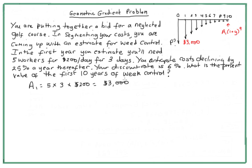Like many weeds, you pull it up the first year and it goes dormant, but you know you're going to have to have a crew back next year because it's pretty persistent. However, you estimate that every year you do this, the cost is going to decline by 25% a year — you gradually get on top of the problem and anticipate it won't always be as bad as the first year. Your discount rate is 6%, the rate at which you discount the future.